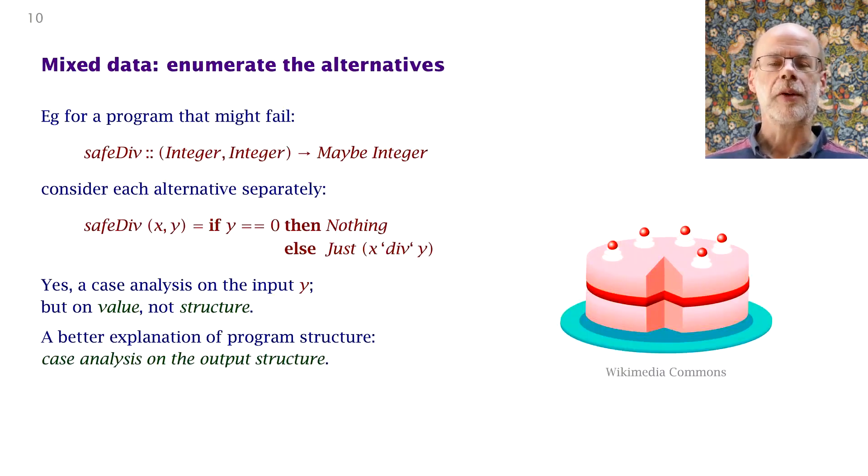Dually, if you have to produce variant data, enumerate the alternatives. So here's a safe division problem. You want to compute X divided by Y, unless Y is zero, in which case you have to produce some separate value instead. In Haskell, the idiomatic way to do that is with the maybe data type. Values of type maybe integer are either nothing or just an integer. And safe division, of course, if Y is zero it produces nothing, otherwise it produces just the quotient X divided by Y.